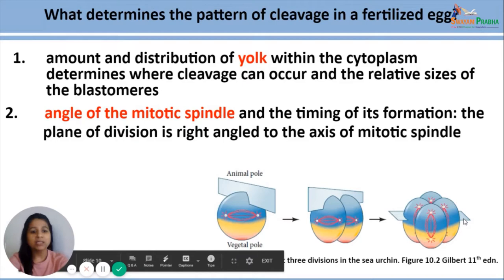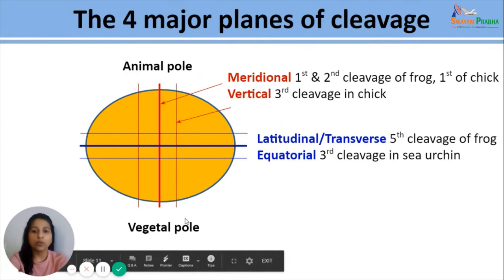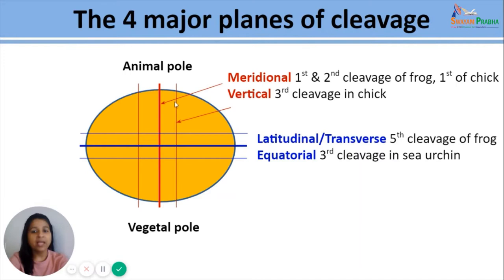We have four major planes of cleavage. The plane passing through the center of the egg from animal to vegetal pole is known as the meridional plane of cleavage, seen in the first and second cleavage of frog and also in the first cleavage of chick. Any other vertical plane not passing through the center is simply known as a vertical plane of cleavage, as seen in the third cleavage in chick.